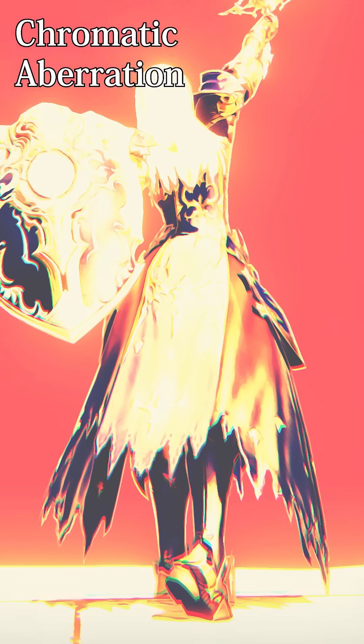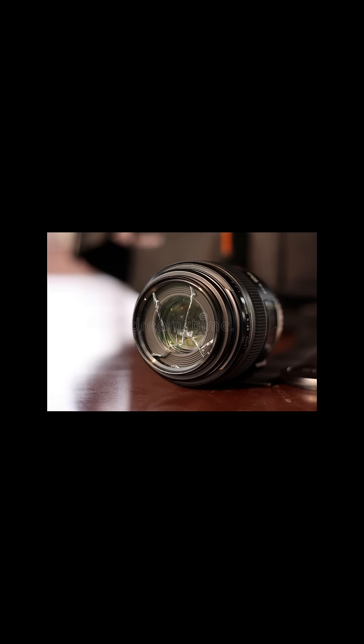Chromatic aberration is a phenomenon caused by a faulty lens's inability to focus all colors to the same point. To demonstrate, instead of red, blue, and green combining at a single point, the colors are instead mildly offset from one another.